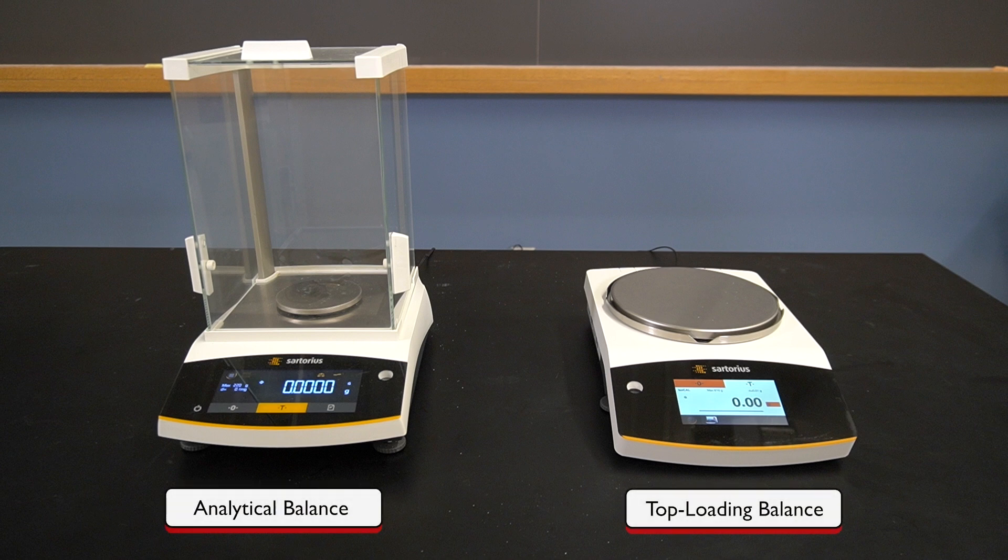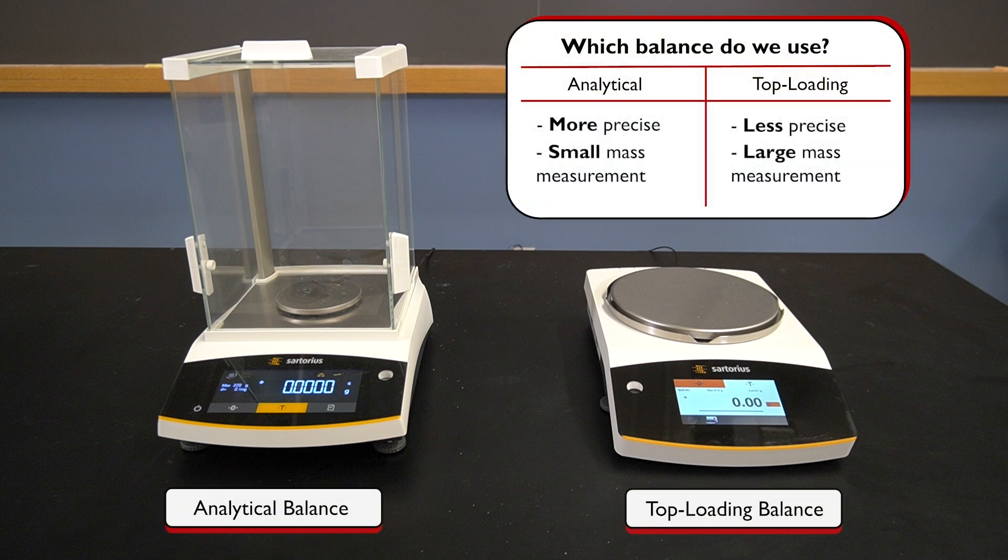While an analytical balance gives a more precise mass measurement, it is not always necessary. In this example, we only need to measure a relatively large mass that is around 2.0 grams, with no requirement for higher precision. Therefore, using the top-loading balance is our best choice. It is faster and easier to use compared to the analytical balance, and it meets our needs for this procedure.